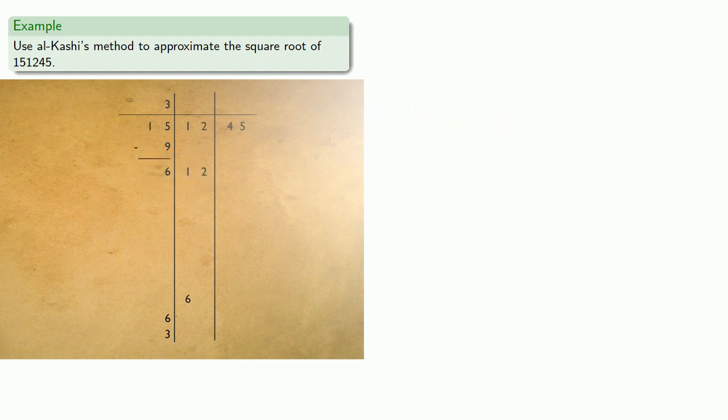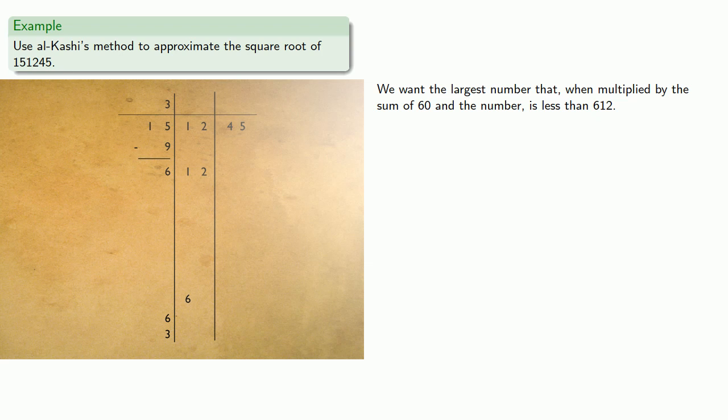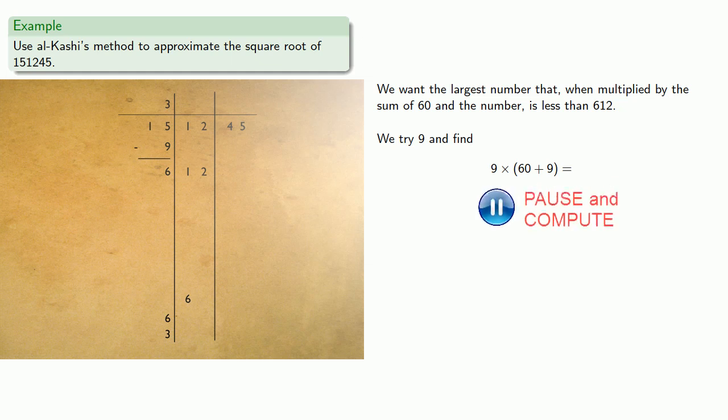Now for our next digit, we want the largest number that when multiplied by the sum of 60 and the number is less than 612. We try 9, and find 9 times 60 plus 9, which is too much.